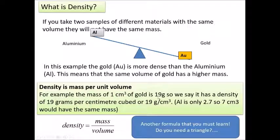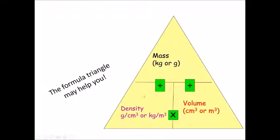For gold, 19 grams in 1 cm³ gives a density of 19. If we use 2 cm³, we'd have 38 grams, but the density would stay the same — 38 divided by 2 is still 19. We can put that into a triangle. You do need to learn it, but if you understand density you'll know it's mass divided by volume, and that mass equals density times volume.